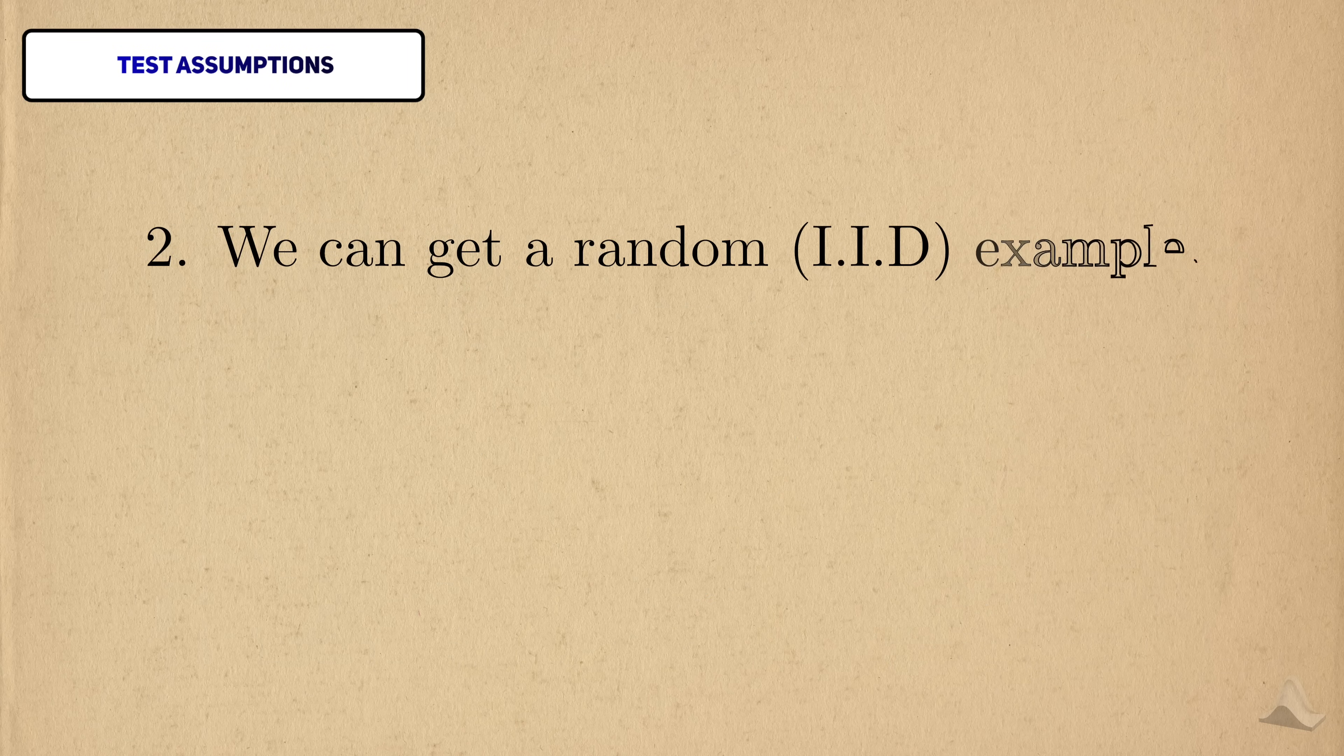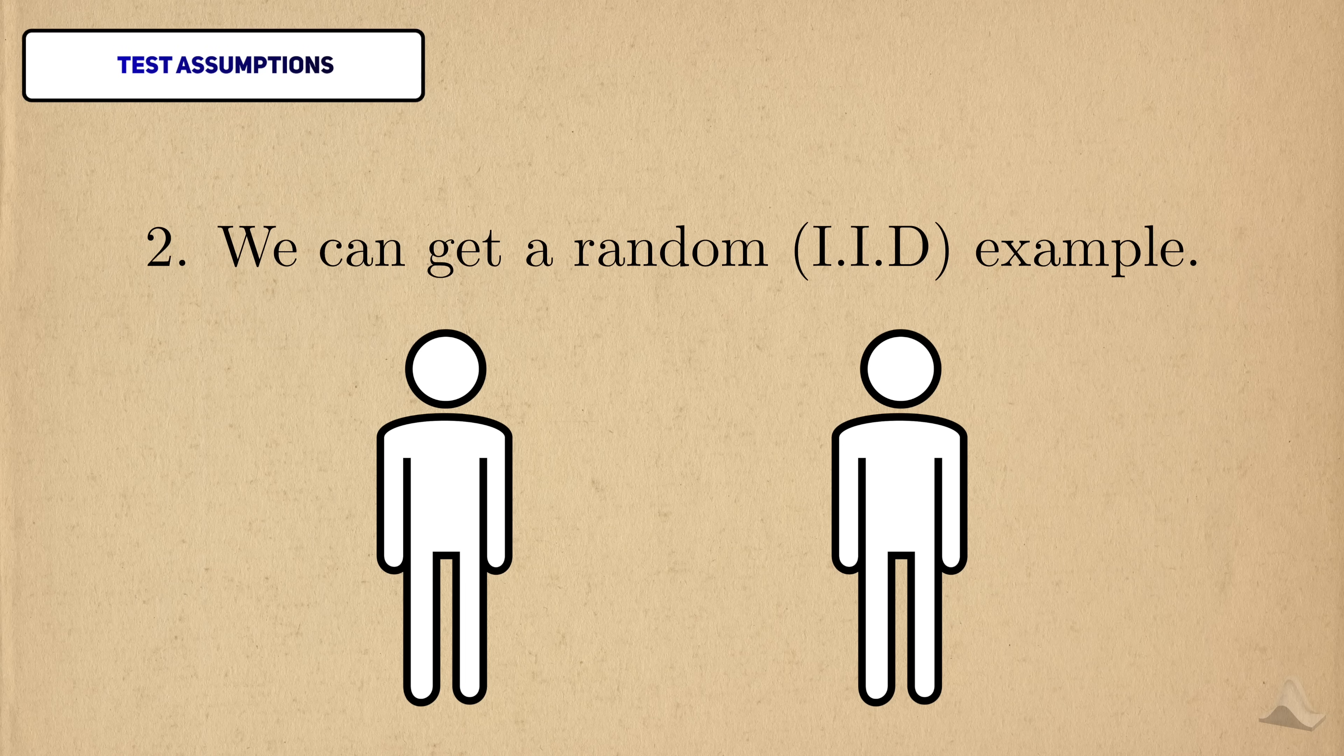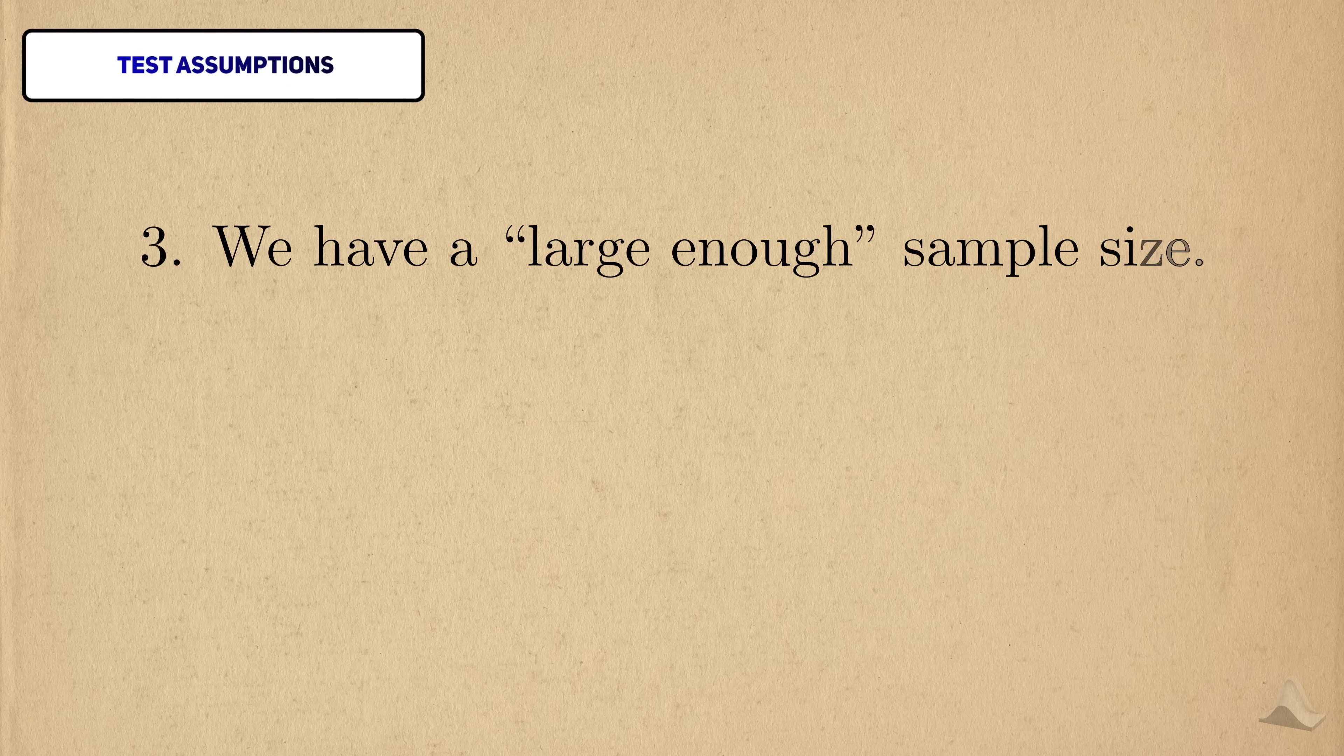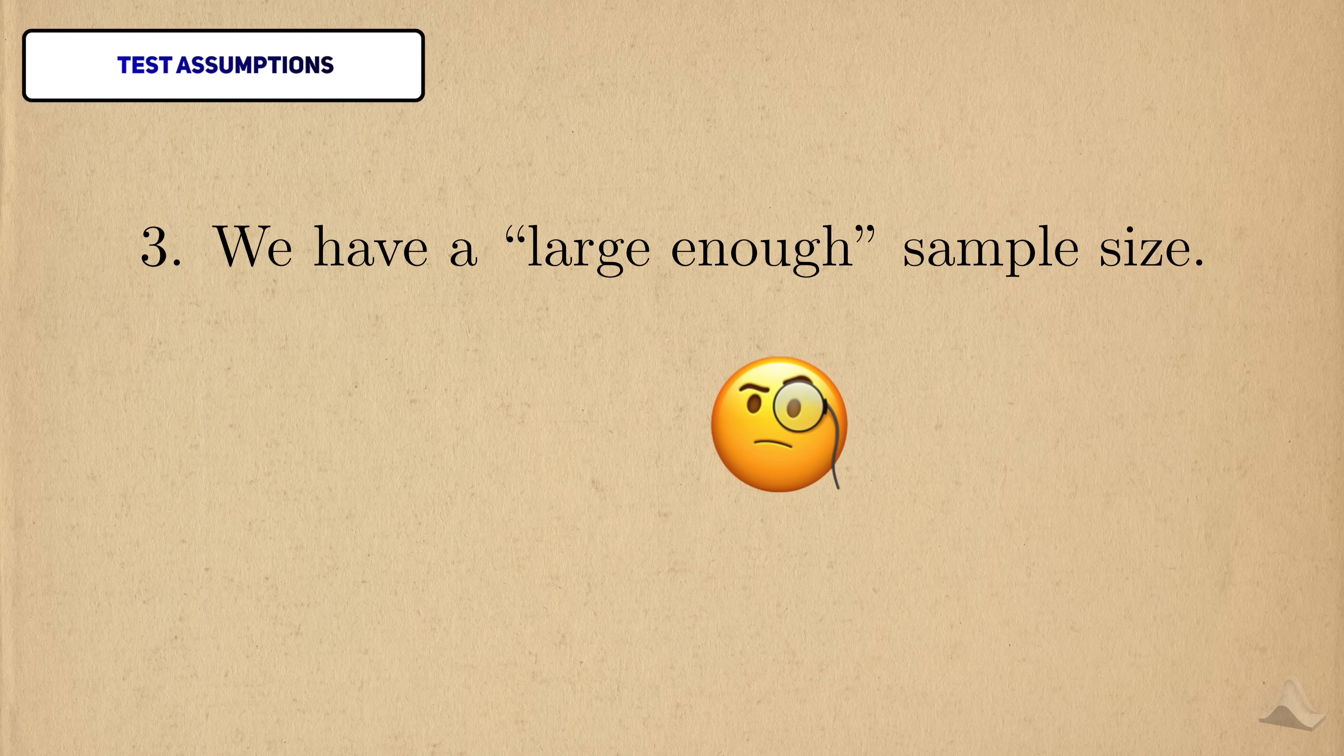Next, we're assuming that we can collect a random sample for both groups, which is another way of saying that we want our data to be independent. We can't have one person's outcome influence the outcome of someone else. Finally, the test assumes that we'll have a large sample size in both groups. This is needed to produce reliable results.